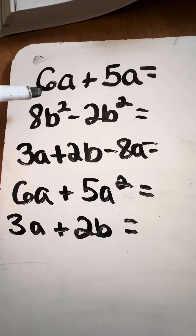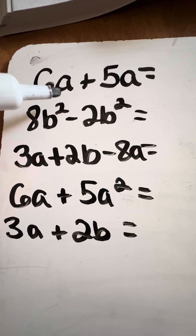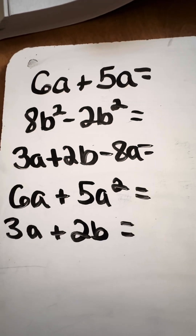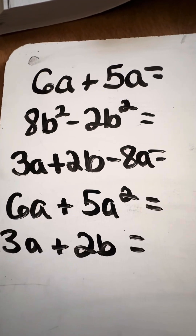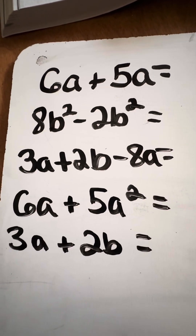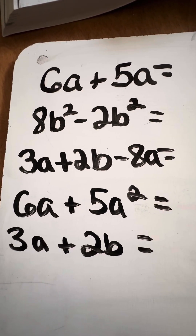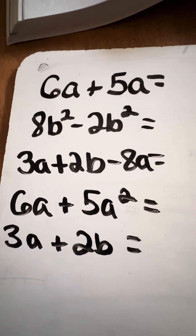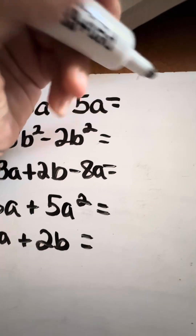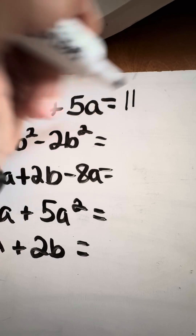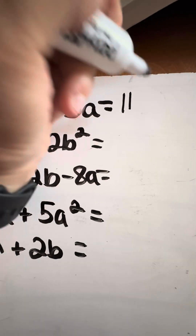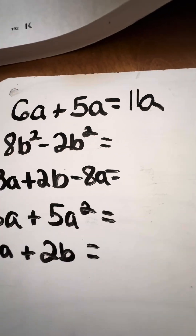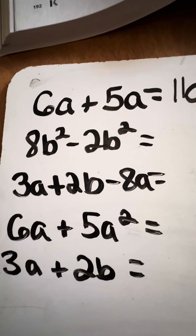If we look at this, we have 6a plus 5a. We can combine that because they're both a's. We have 6 a's on the left and 5 a's on the right, which means we have a total of 11 a's. We just add the coefficients — the numbers in front of a — together.